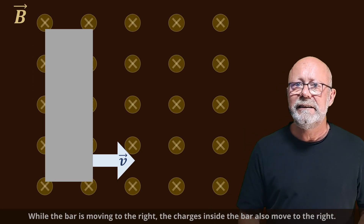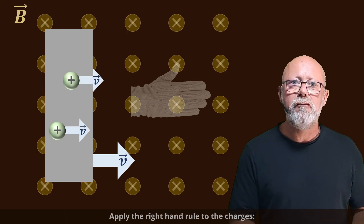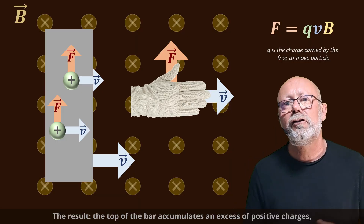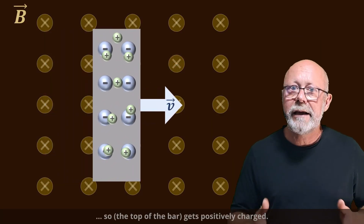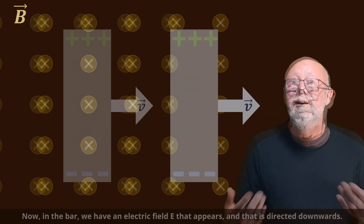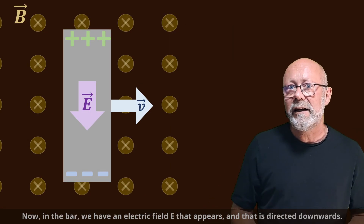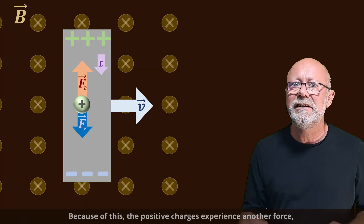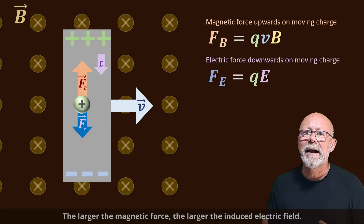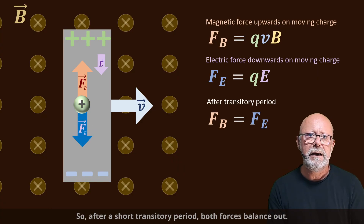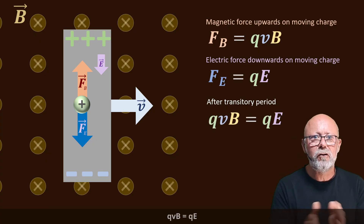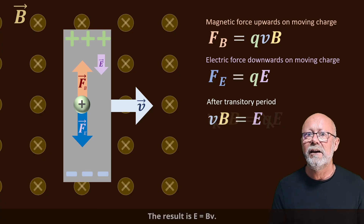While the bar is moving to the right, the charges inside the bar also move to the right. Applying the right-hand rule to the charges, the magnetic field causes a force of magnitude QVB upwards on positive charges. The result: the top of the bar accumulates an excess of positive charges, so it gets positively charged, while the bottom of the bar gets a deficit of positive charges, so it gets negatively charged. So now in the bar, we have an electric field E that appears, directed downwards. Because of this, the positive charges experience another force of electrical nature: F = QE, directed downwards. The larger the magnetic force, the larger the induced electric field. So after a short transitory period, both forces balance out. We can write that the magnetic force equals the electric force: QVB = QE. When you simplify, the charge cancels, and the result is E = BV.